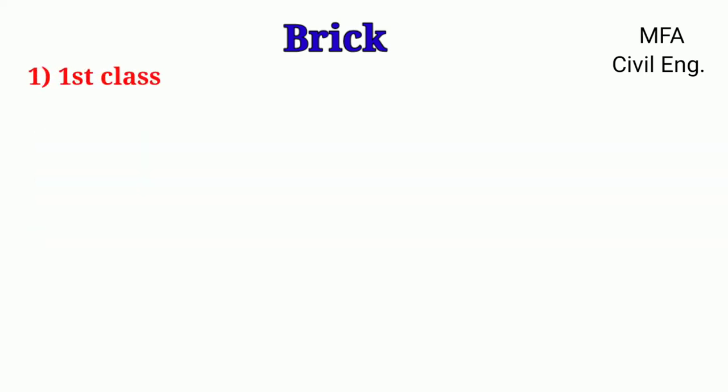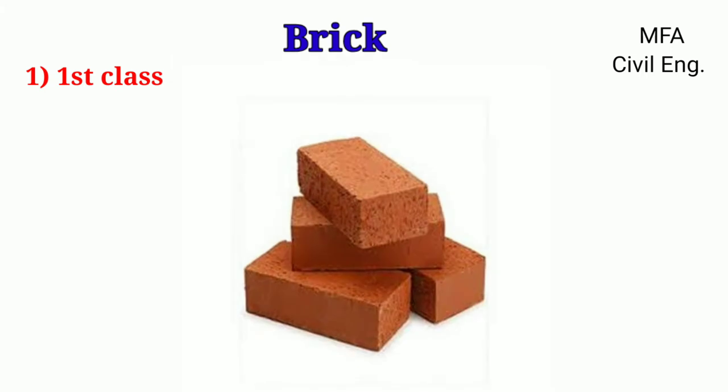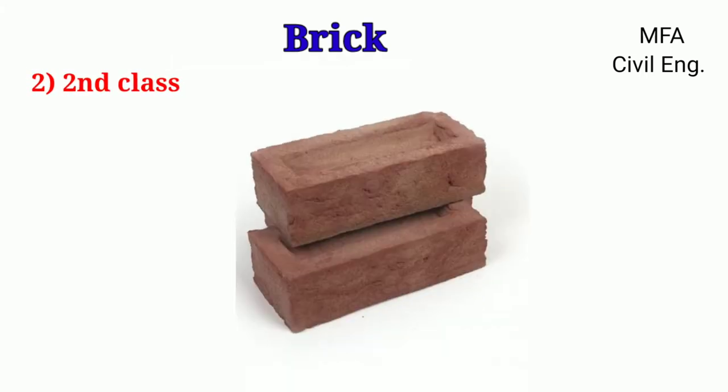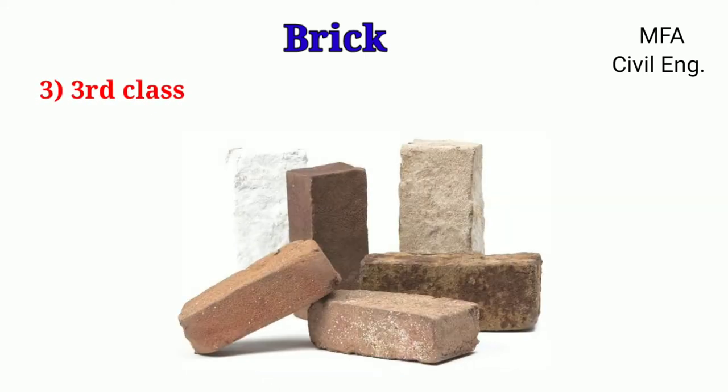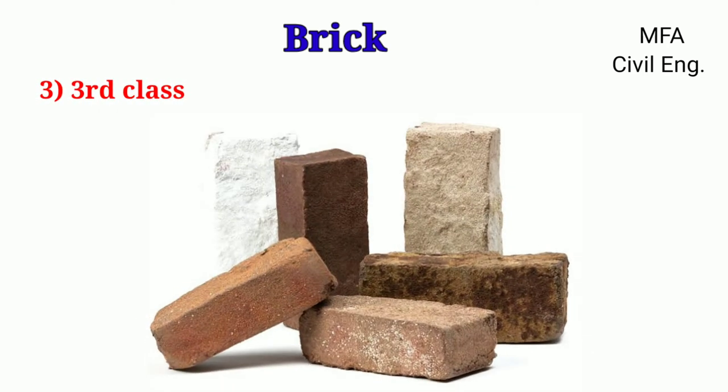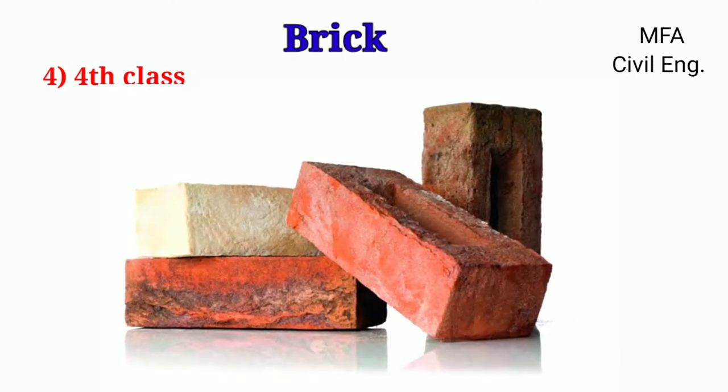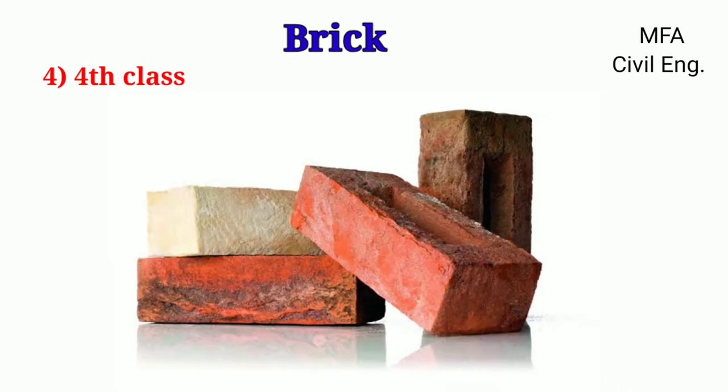First class bricks are well-burnt, with a proper rectangular shape and size with sharp edges. Second class bricks are irregular in shape and size, with edges not as sharp as first class bricks. Third class bricks are usually underburnt, which are soft and light in color. Fourth class bricks are overburnt, having a deformed shape and size.